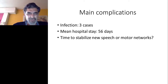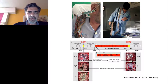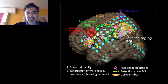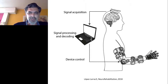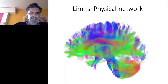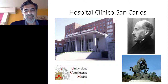The main complications were infection, a long hospital stay, and the time required to stabilize new speech or motor networks, because patients had to be maintained with external stimulation for extended periods. Our next step will be to use implanted generators connected to subcutaneous grids to improve this. This procedure has been repeated in other hospitals, for example to remove an epileptic focus in Wernicke's area. Future steps will likely include using this procedure to improve brain-machine interfaces in stroke rehabilitation. We must also determine the limits of the procedure, which will probably depend on the physical networks holding brain functions. Thank you very much — this is my hospital, and I invite you to visit whenever you want.